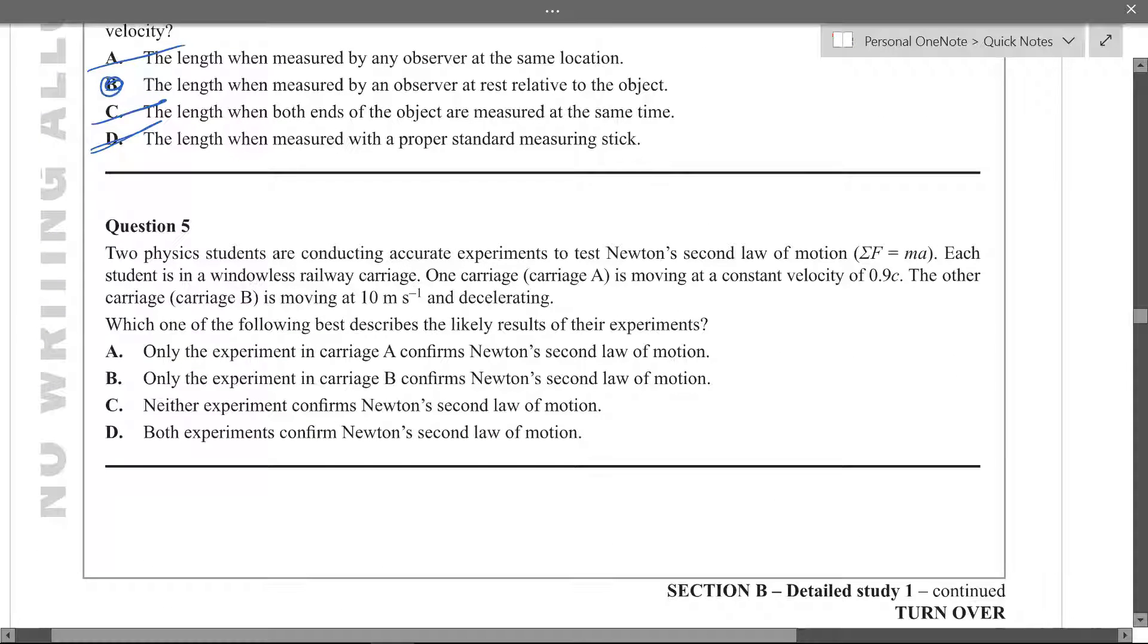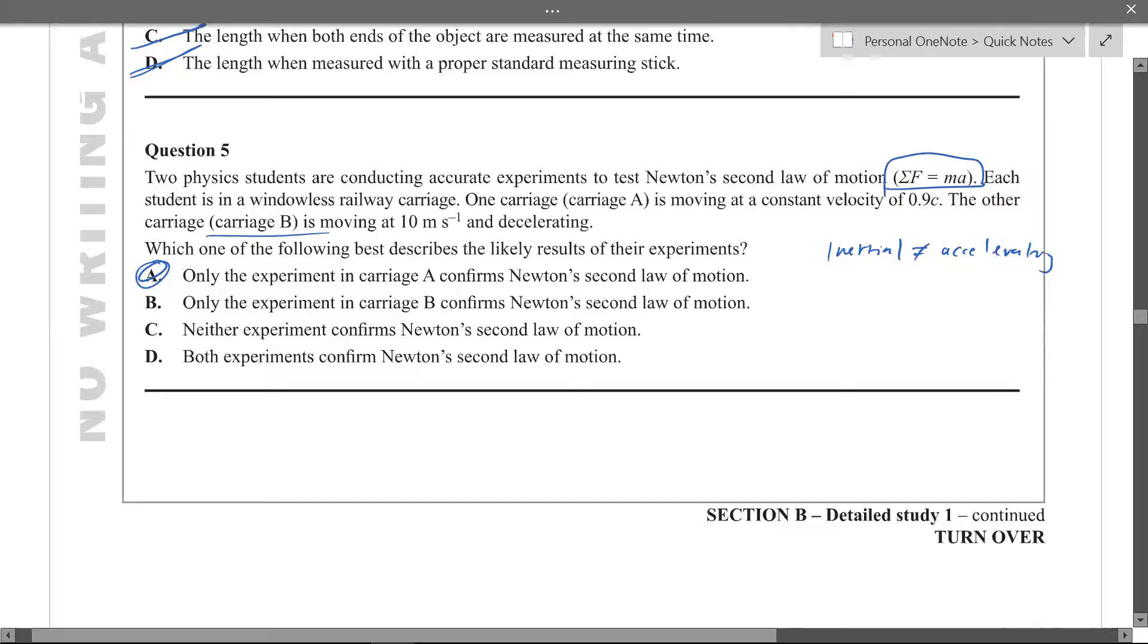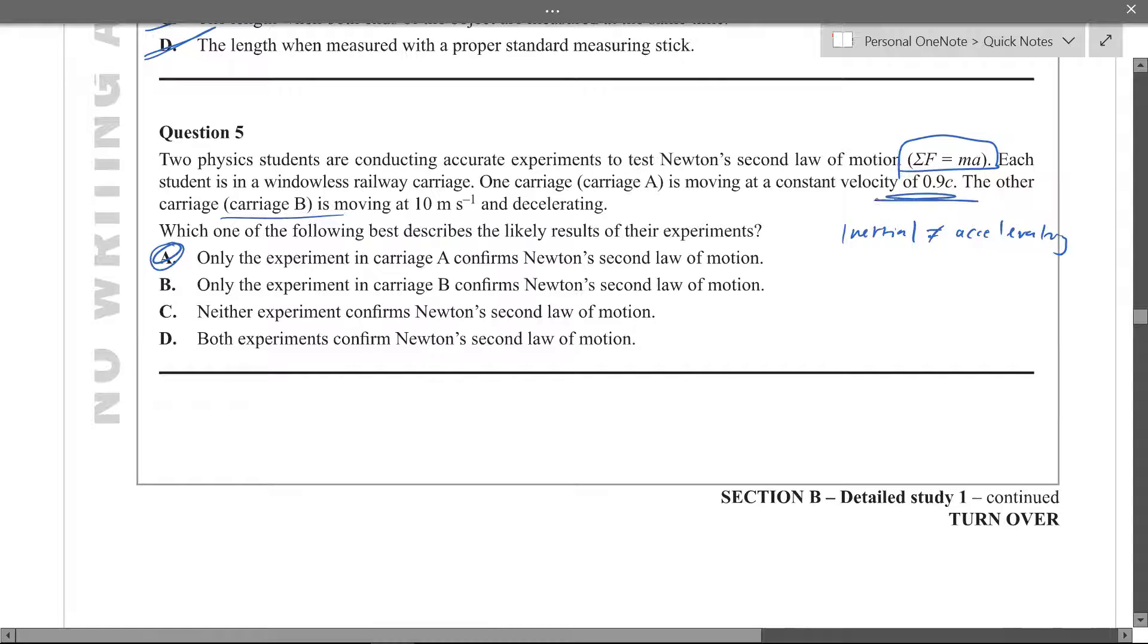So question five, two physics students are doing an experiment to test efficacy and one carriage is moving at 0.9c and the other is moving at 10 meters per second but it's decelerating. Which is the result? For this one we know Einstein's postulate, one of them states that the laws of motion are true for inertial frames. So if inertial it can't be accelerating. So if it's not accelerating it can't be carriage b. So we can't find, we can't use Newton's second law for the second carriage. So the only one it will work for is carriage a because carriage a is moving at a constant velocity so it's not accelerating.